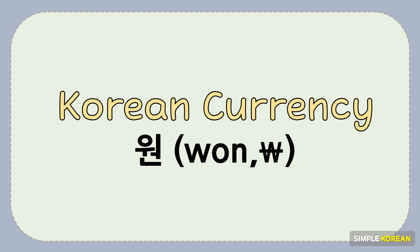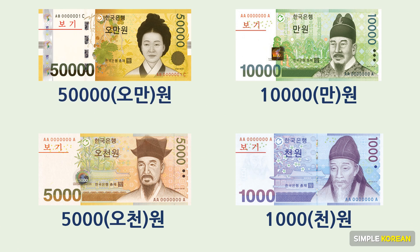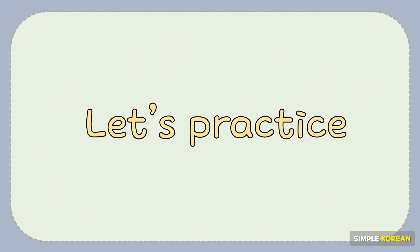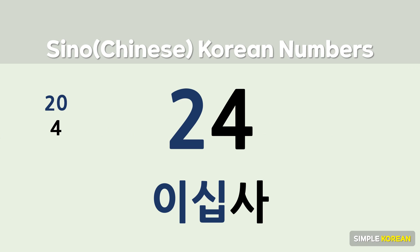Sino-Korean numbers are also used for counting Korean currency. For example: 50,000원, 1,000원, 24,000원.